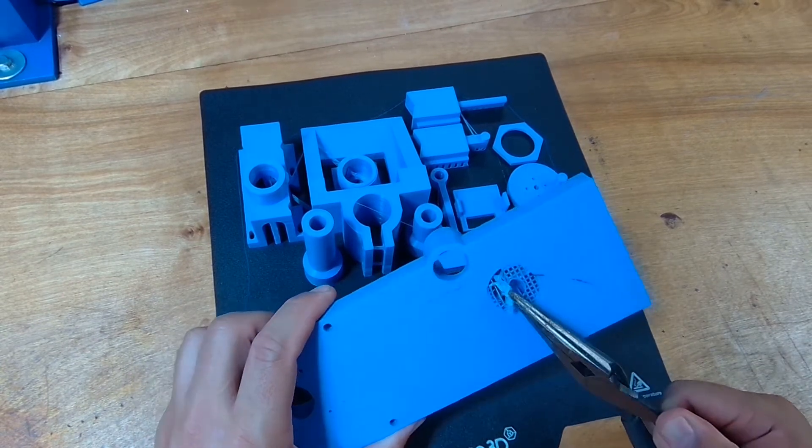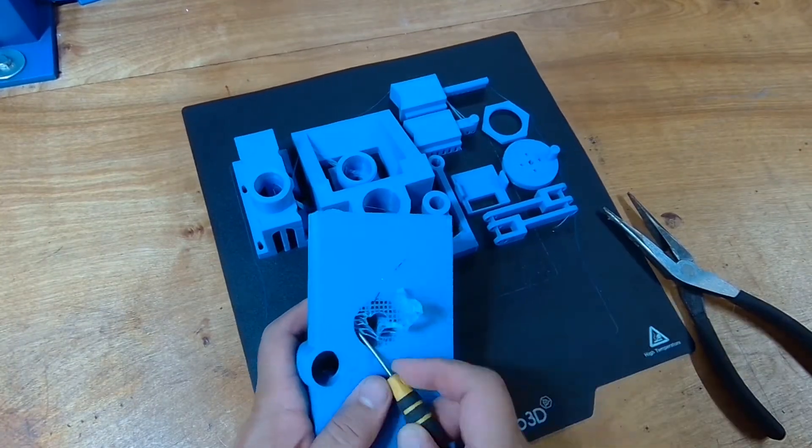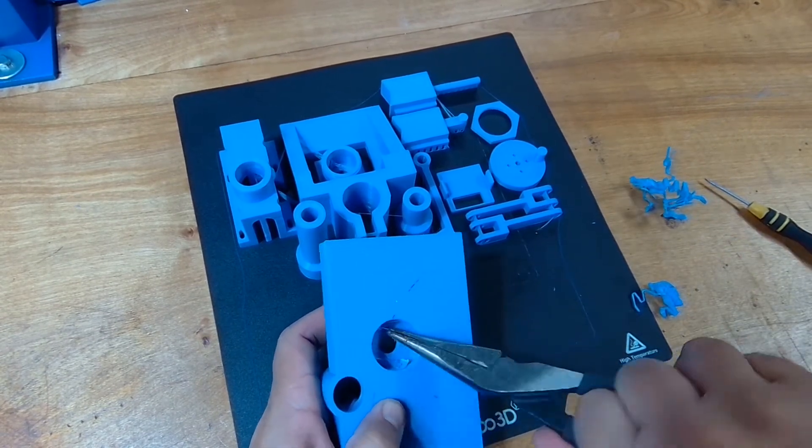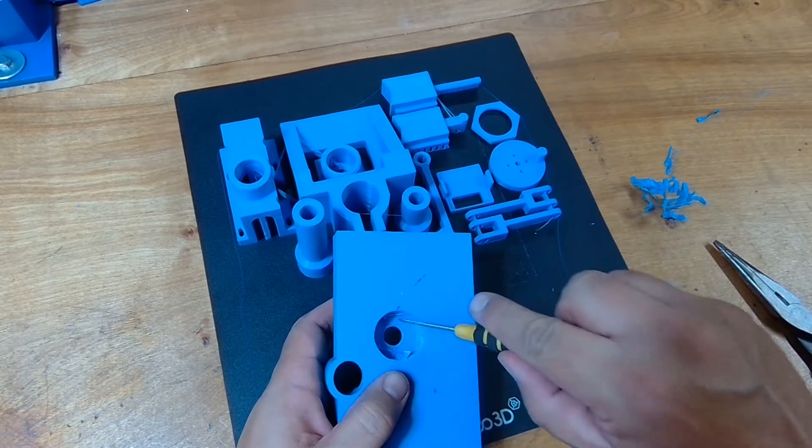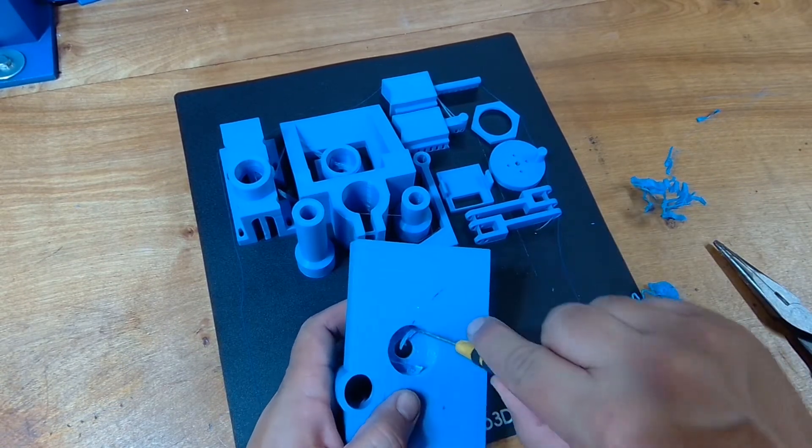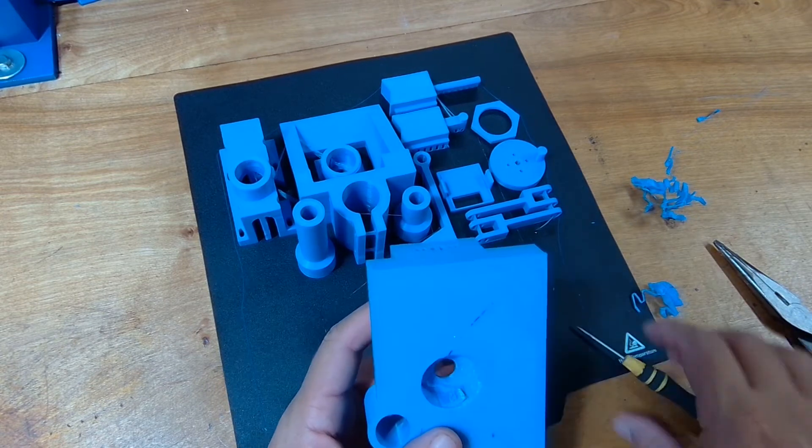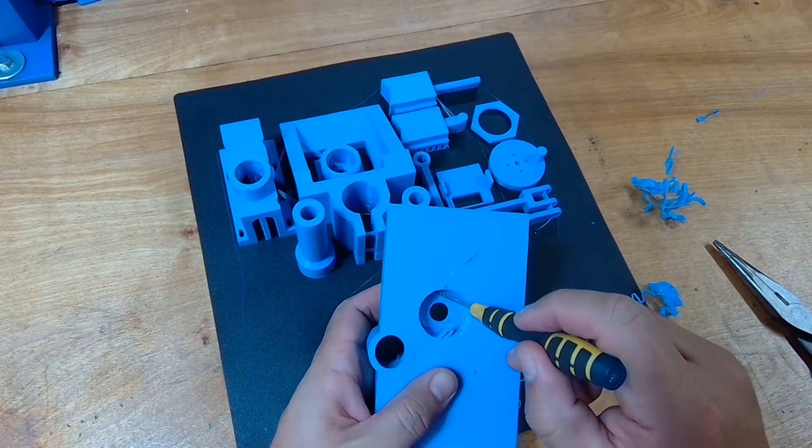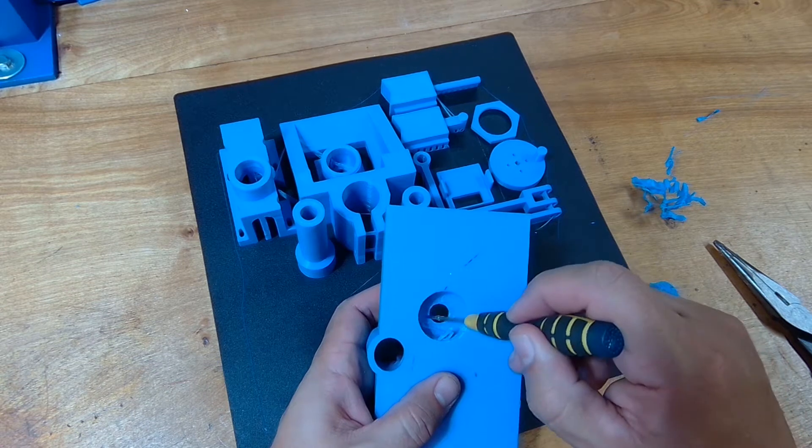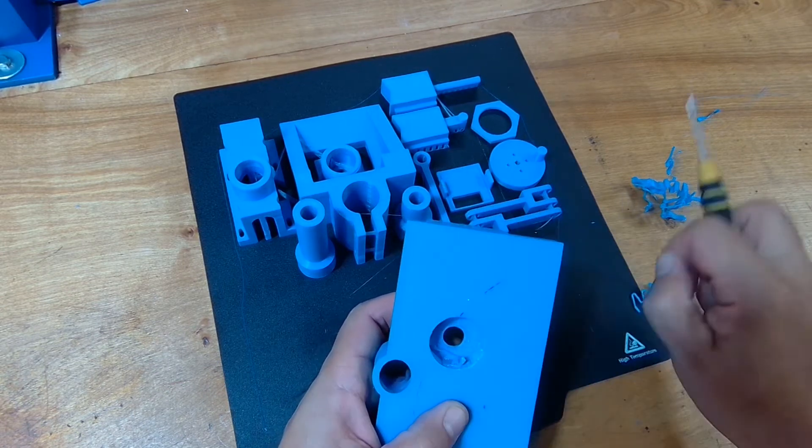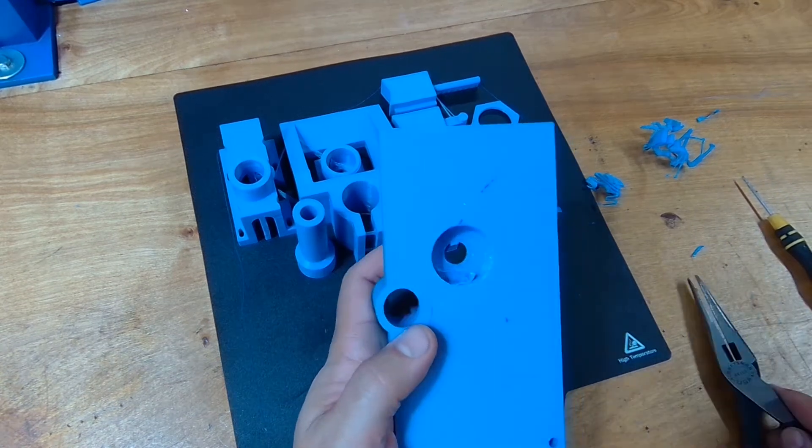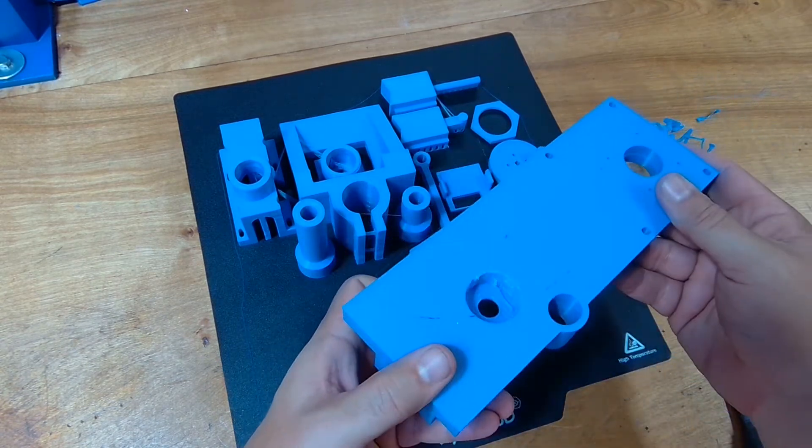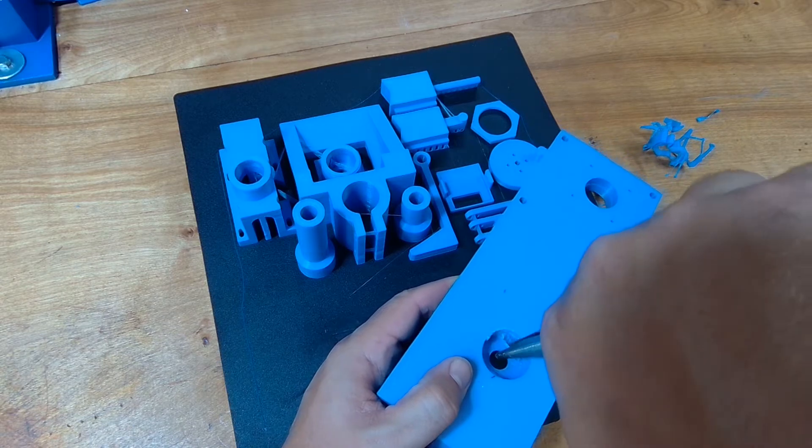So there is a section here—the support section—which we're going to have to break out. On the subject of printing this in a color other than black, if you were going to do that I would recommend you paint or use a sharpie to black in this inside surface, as that's going to be visible in the camera pictures.